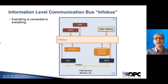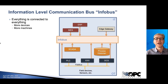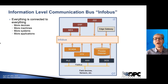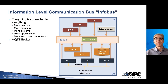Let me describe this idea of the InfoBus — terminology I've just created for this presentation, as I don't really see any existing name for this. In the case that everything is connected to everything, we don't really want to configure all the connections between all components. We're getting more devices, more machines, more systems, more applications, and overall more and more connections. So the architecture could be defined as having just a common communication bus where everything connects — and in practice, this can be accomplished with an MQTT broker, where all the applications publish their data.